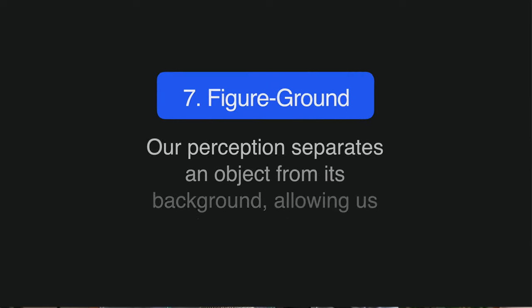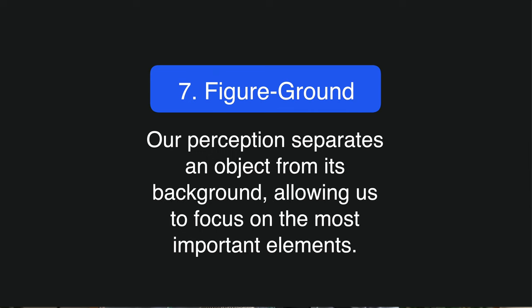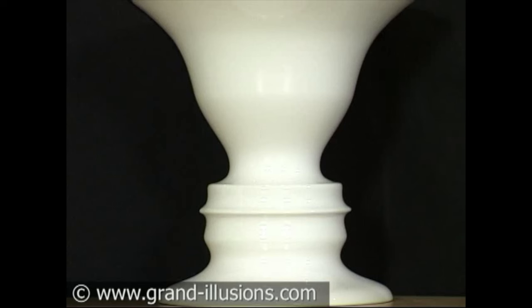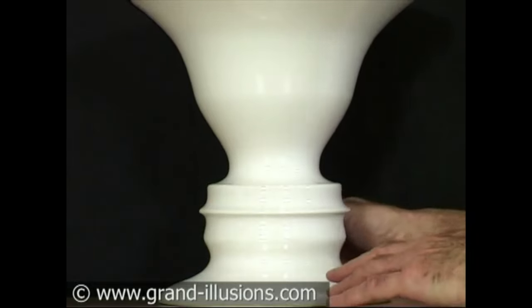And finally, the seventh principle is figure-ground. Our perception separates an object from its background, allowing us to focus on the most important elements. This was originally shown by a classic visual illusion known as Rubin's vase, where there is ambiguity about the foreground and background. Is the vase here the figure, and the black is the background? Or is it that there are faces here looking at one another against a light background?